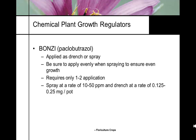Sumagic (uniconazole) is slightly more active than Bonsai but they are very similar chemicals. When people first started using these triazole plant growth regulators, overapplication could prevent plants from ever growing out of the effect, so you have to be very careful. Whereas daminozide (B9) is applied at 2,500 ppm — scooped with a tablespoon — these triazoles are measured with a graduated cylinder at much smaller quantities.